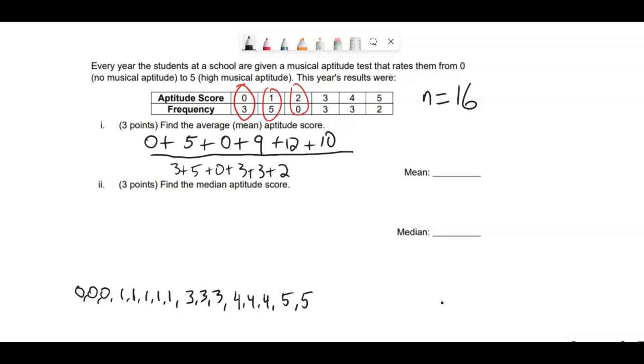So we end up with ten, twenty-two, twenty-seven, thirty-six. The numerator is thirty-six.